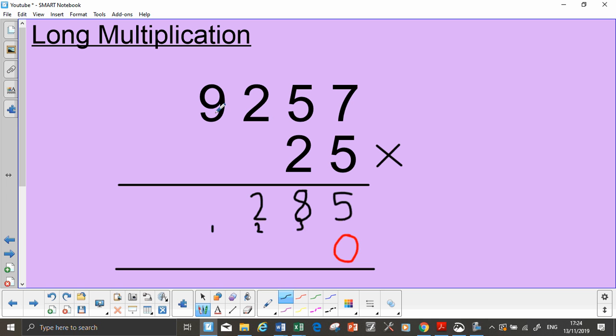Then I need to do 5 times by 9, which is 45. I've got one more down here, so it's 46. So my 6 goes here, and my 4 goes up there, because I've finished.